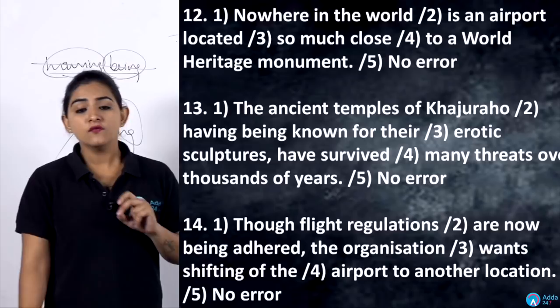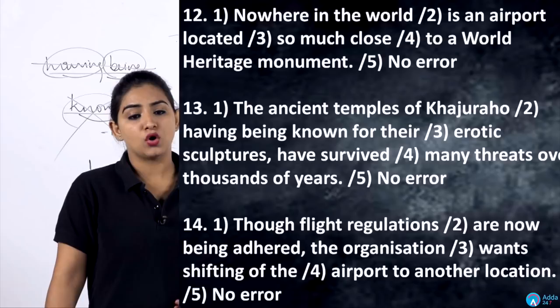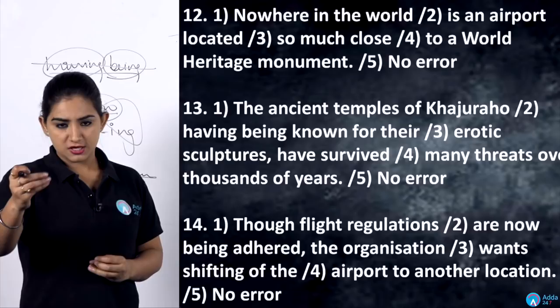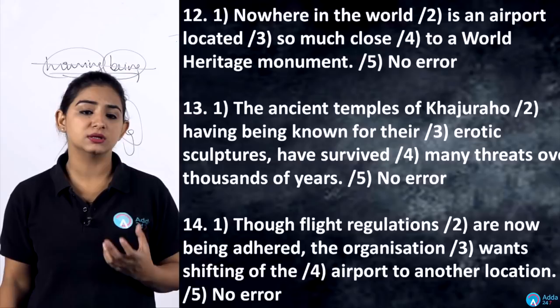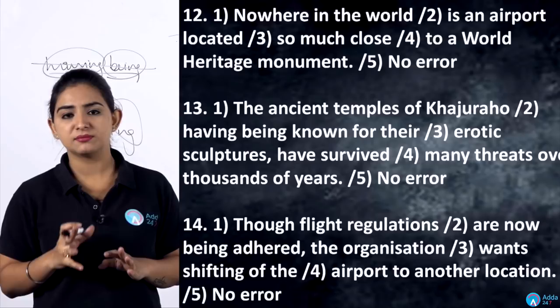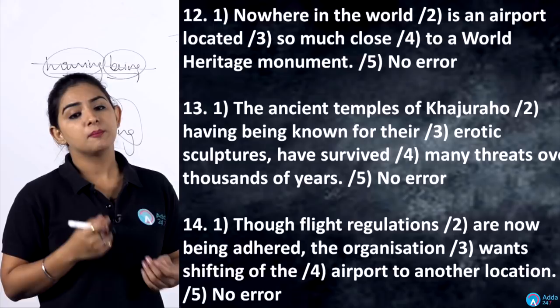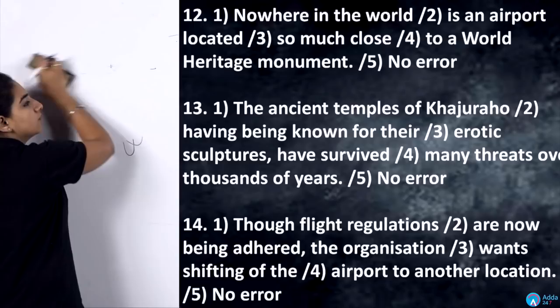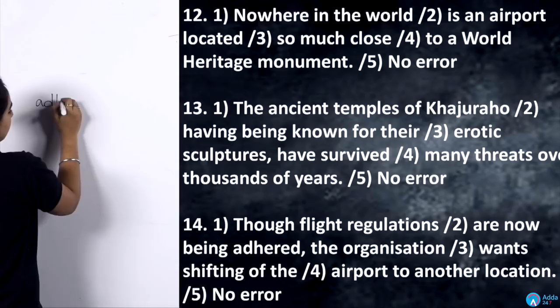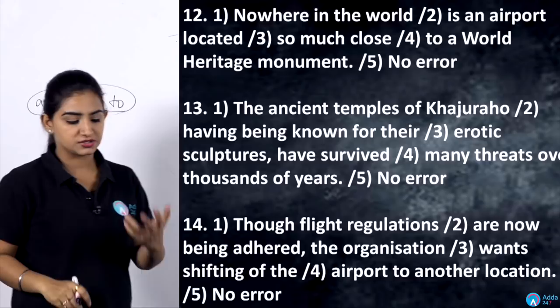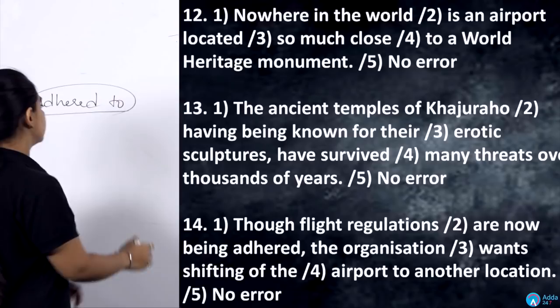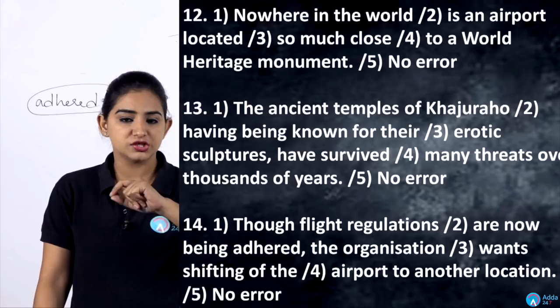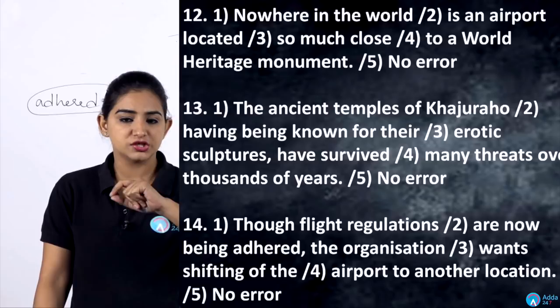Question 14: 'Though flight regulations are now being adhered, the organization wants shifting of the airport to another location.' The error is a missing preposition — 'adhered' requires 'to' after it. We always say 'adhere to the rules,' 'adhere to the timing.' Corrected sentence: 'Though flight regulations are now being adhered to, the organization wants shifting of the airport to another location.'